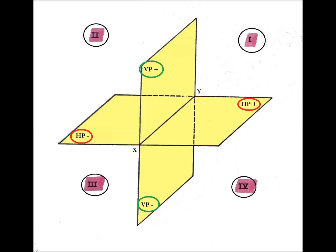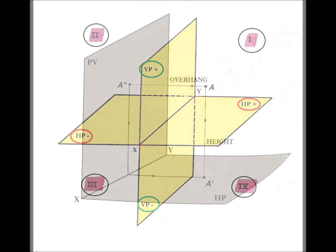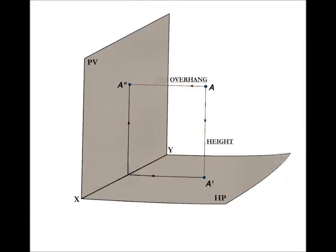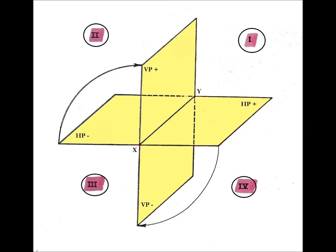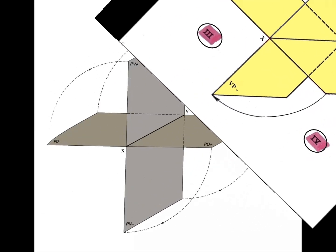Now, the problem is that on the drawing sheet such three-dimensionality is unachievable. And that's because we have to represent on a single sheet, and therefore a single plane, the information given by not one, but two mutually perpendicular projection planes. We solve the problem by rotating the horizontal projection plane, so that the positive horizontal half plane overlaps with the negative vertical half plane, and so that the negative horizontal half plane overlaps with the positive vertical half plane.